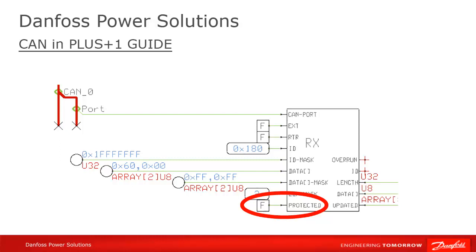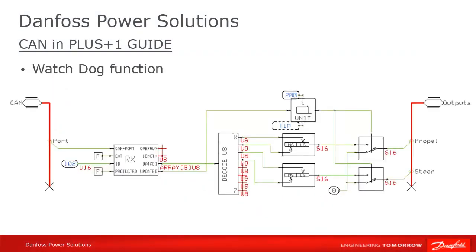Remember that the basic CAN protocol doesn't assure delivery of a sent message. There is no handshaking in basic CAN, so you should always make plans in your program for what to do if CAN communications are interrupted. For example, say that we are receiving CAN messages in our PROPEL function. In between commands, we continue to do what was commanded in the last valid message. If, however, we stop receiving messages completely, we don't want to continue indefinitely with our last command. Here's an example of how you could implement a very simple watchdog function in GUIDE. We'll wait 200 milliseconds since the last valid message before activating our watchdog function. If we haven't received anything during that time, we'll consider that there is a problem in CAN communications and set the PROPEL value to 0. A very simple way to implement this in GUIDE is with the OFF DELAY component.